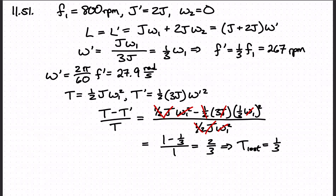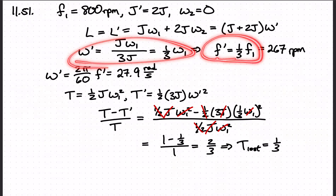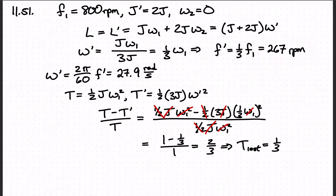In going from RPM to radians per second, there's a conversion factor of 2π/60, but that factor cancels out in this expression. So we can say that F′ equals one-third of F, which means F′ is 267 RPM.